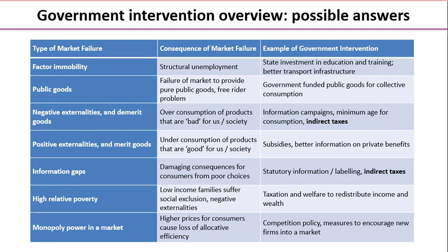The final two market failures at the bottom are high relative poverty and monopoly power in a market. These might be topics you haven't explored a huge amount yet if you're in Year 12, as many teachers tend to cover these in Year 13. But they are still types of market failure and using a little initiative you were probably able to come up with something sensible. Take a moment to look through our suggested answers and compare and contrast with what you already chose.